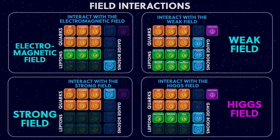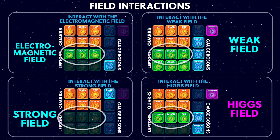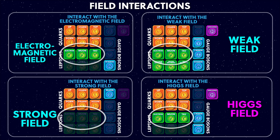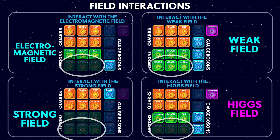Looking at the field interaction charts again for the leptons: the electron, muon and tau interact with everything except the strong force and get their masses from the Higgs field. Below them are the neutrinos, which have got very small masses and don't carry electric charge, and so these only interact with the weak force. Because of this, they're very difficult to detect as they interact with matter very, very rarely.